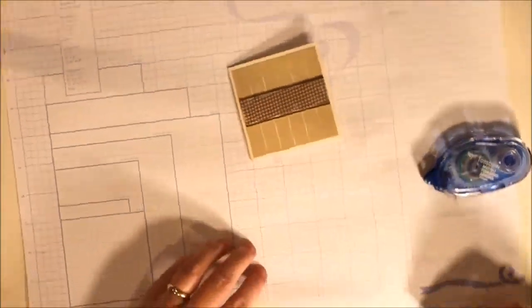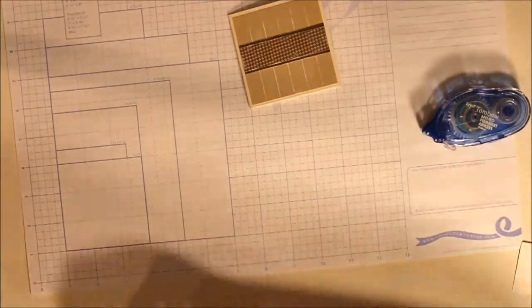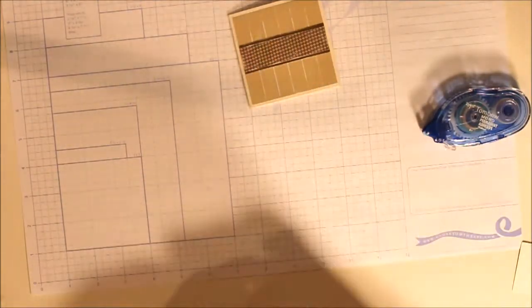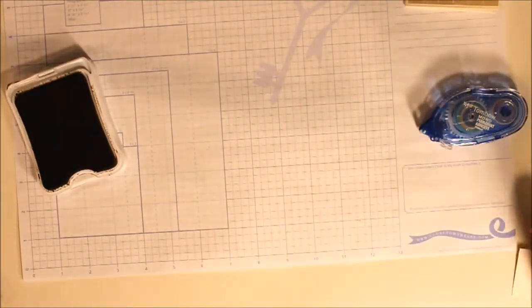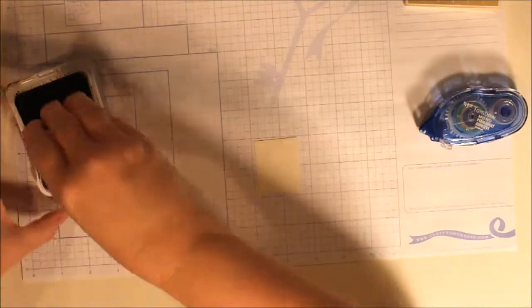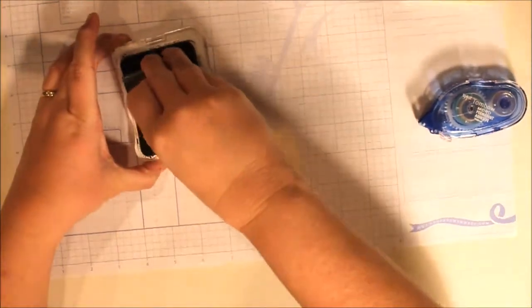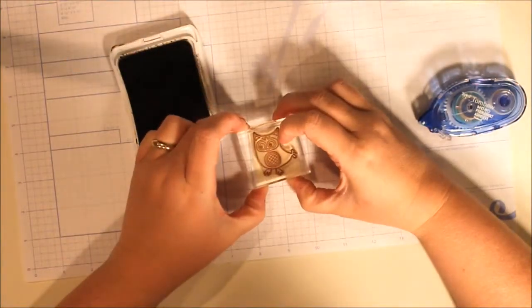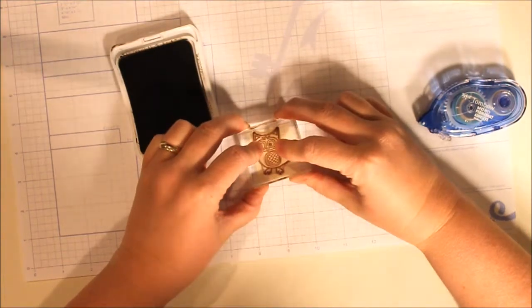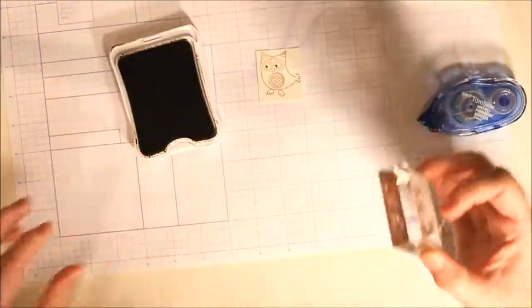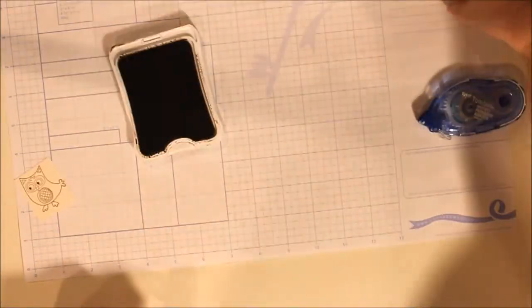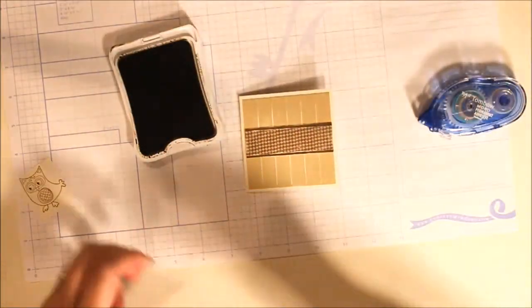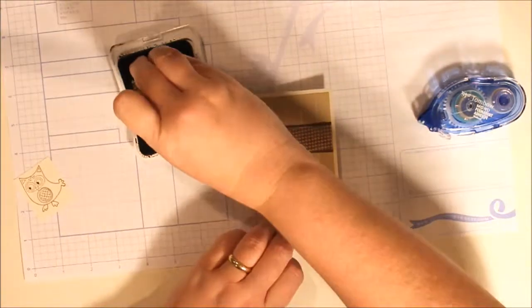I already have them loaded on my stamp block. We're using the chocolate ink. And we're going to stamp the owl with the chocolate ink. And then we're going to stamp a couple of the leaf patterns down at the bottom.